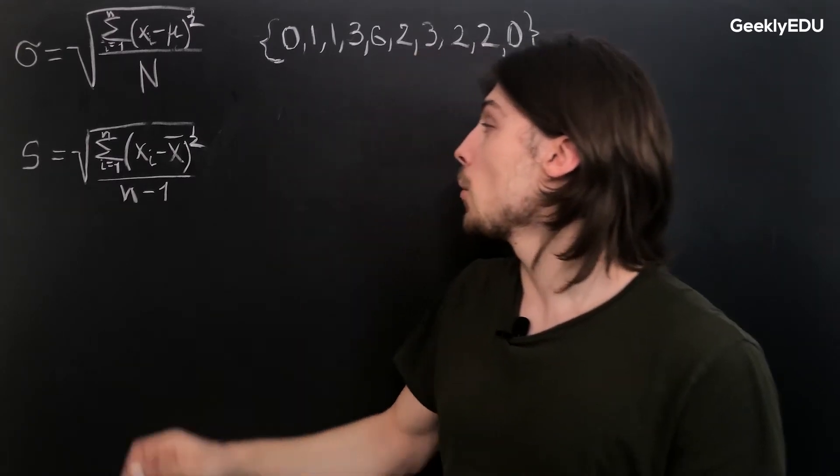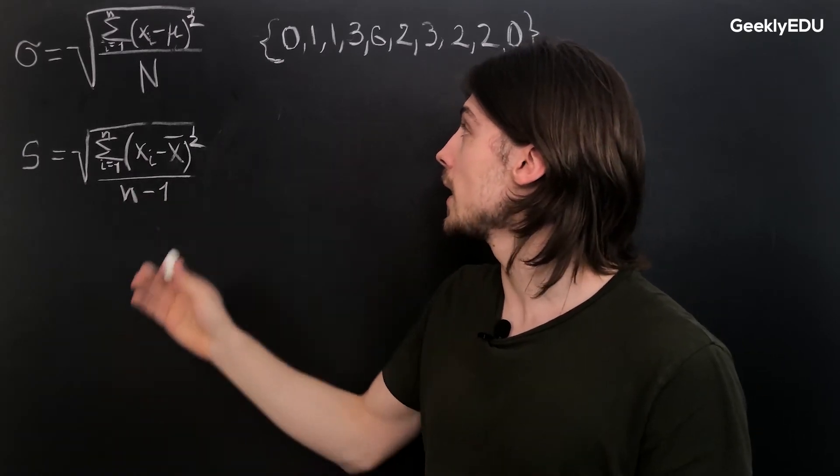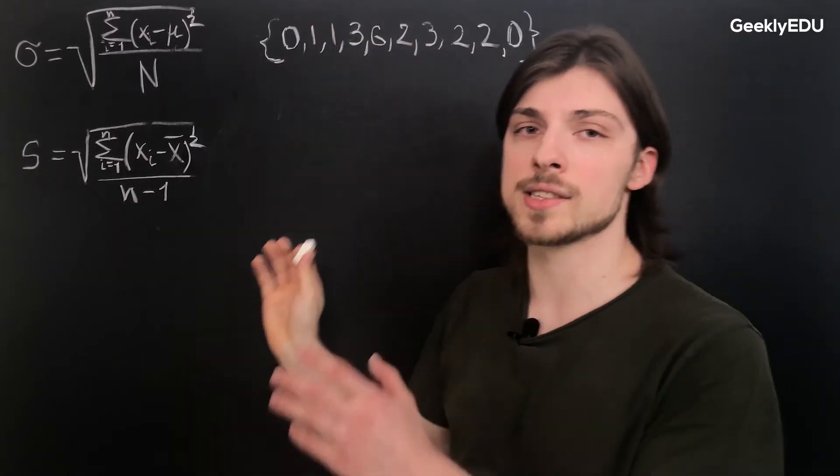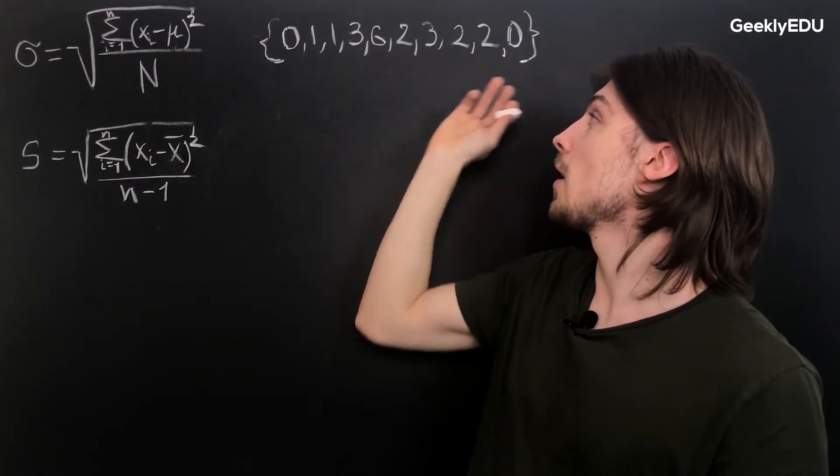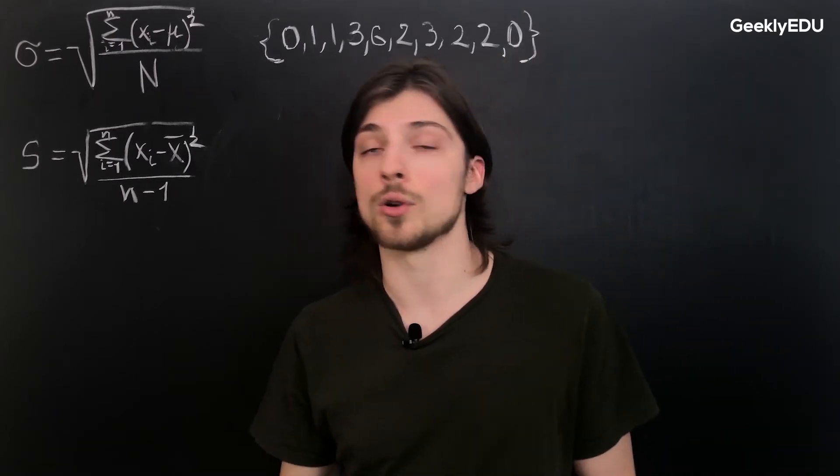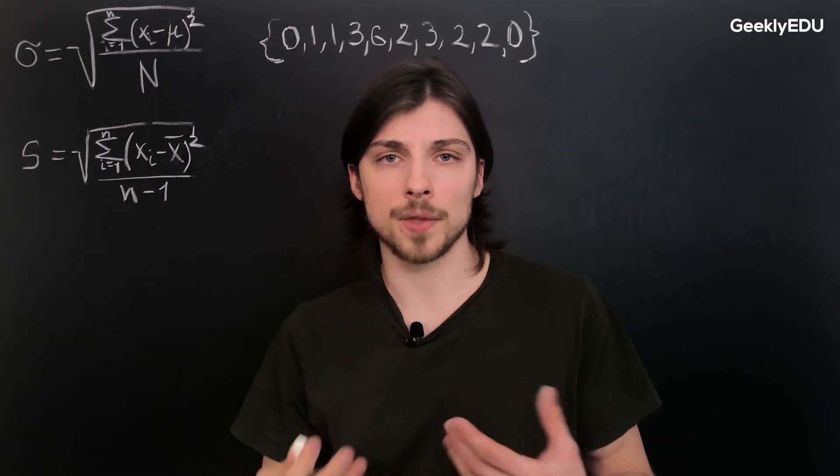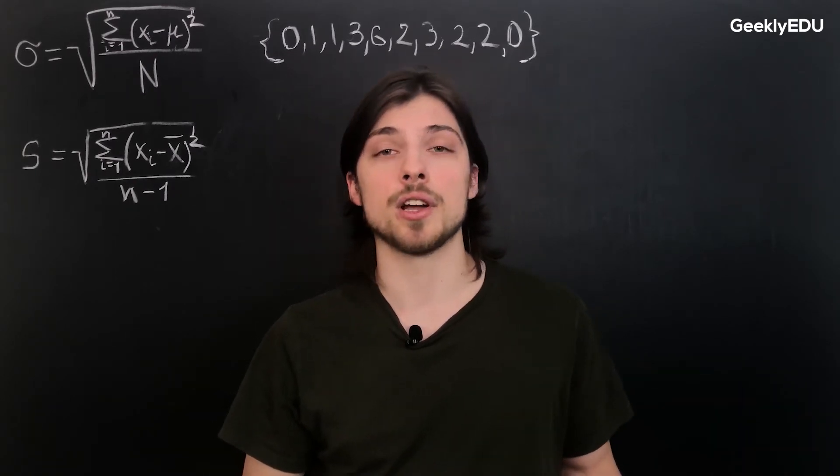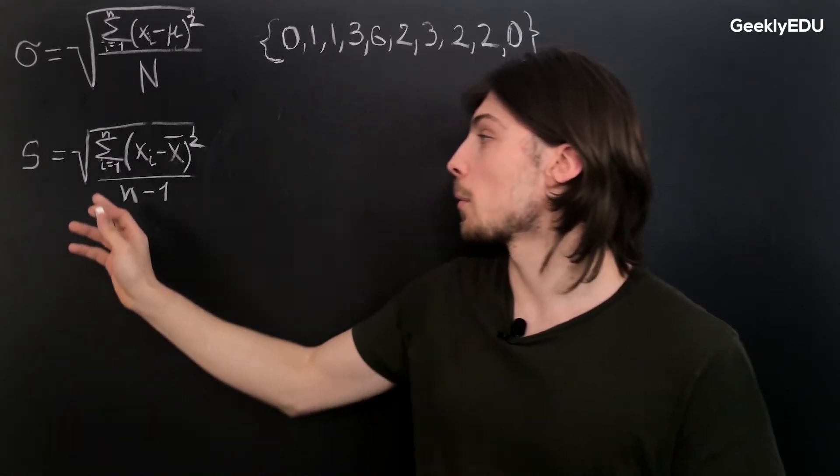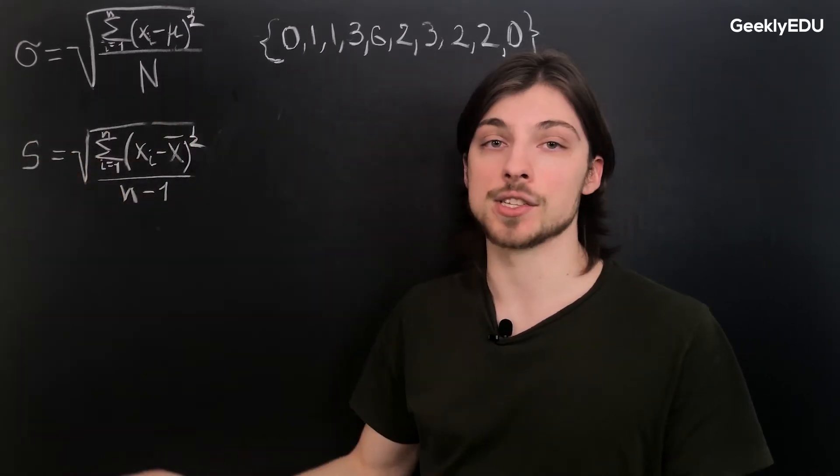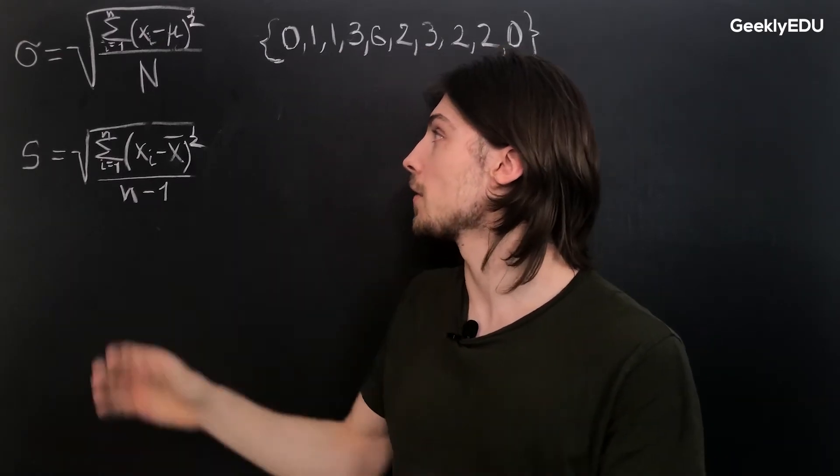Now we know the two formulas, we can calculate the data set over here. Let's assume to give it some more context that this is the number of pets some of your classmates have. So this data set here includes 10 data points - that's probably not the entirety of your class, much less so the entirety of your school. That's why we're going to use this formula over here, which calculates for the sample, which would be much smaller than the entire population.